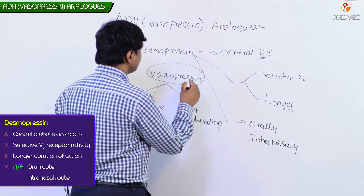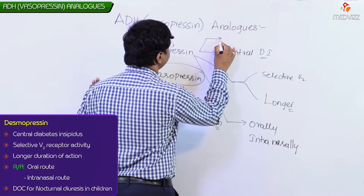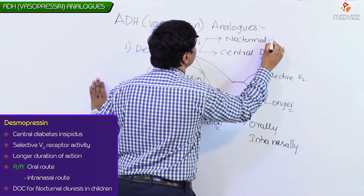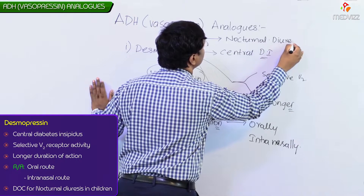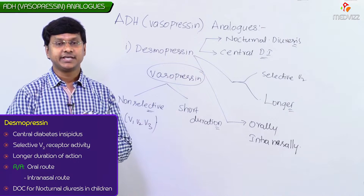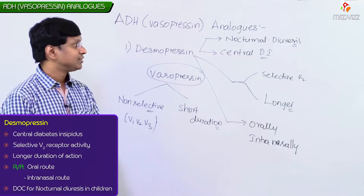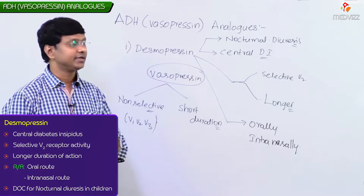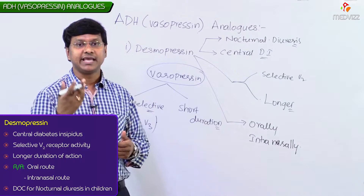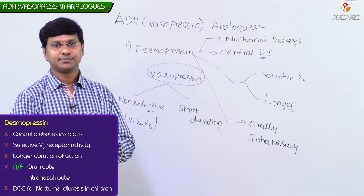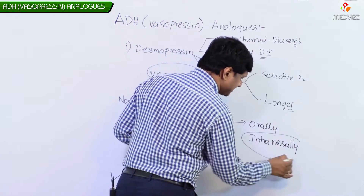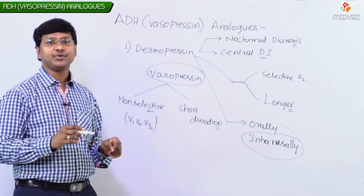Desmopressin is also the drug of choice for nocturnal enuresis in children. In those children who have the habit of bed-wetting, if you give this particular Desmopressin, that nocturnal diuresis or nocturnal enuresis will be reduced.